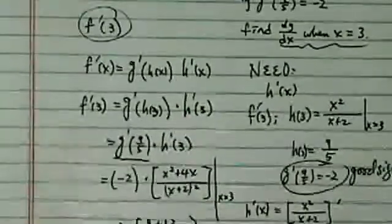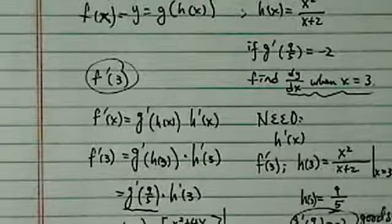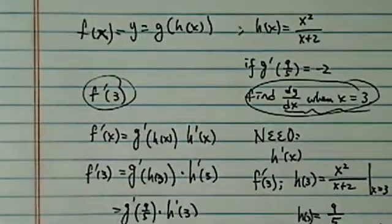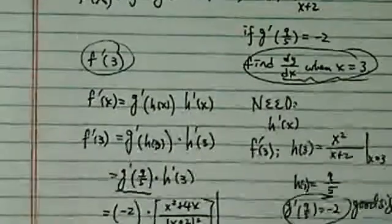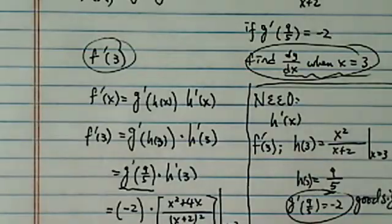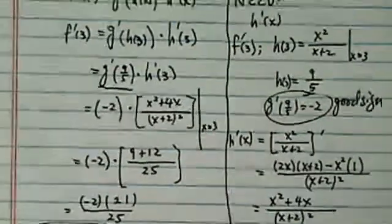Once again, so the way we started this problem is we know what they're asking. They're asking for f prime of 3, and then we kind of worked it backward a little bit. And so this block is to say, what are the information I need, and do I have enough to find everything I need?